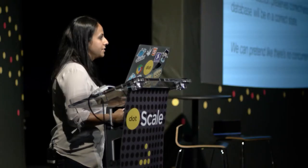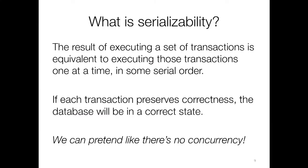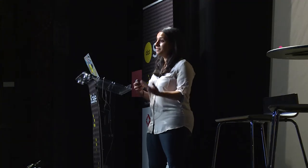If we have a database with serializability and each transaction is written correctly to preserve our bank balances, then at the end of a run of concurrent transactions, the database should still be in a correct state. What's really nice here is that means we can pretend there's no concurrency happening. We can write our transactions as though they're executing one at a time on a copy of the database. A serializable database will take care of running these for us in parallel or concurrently, but still get the right answer.